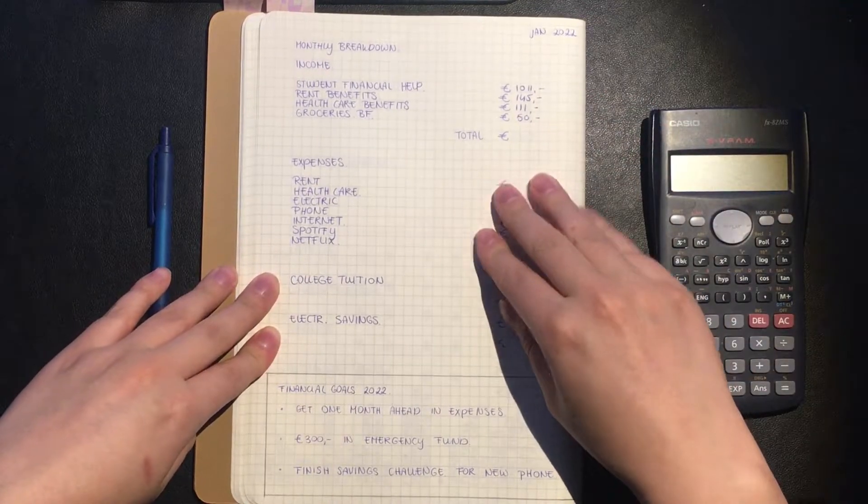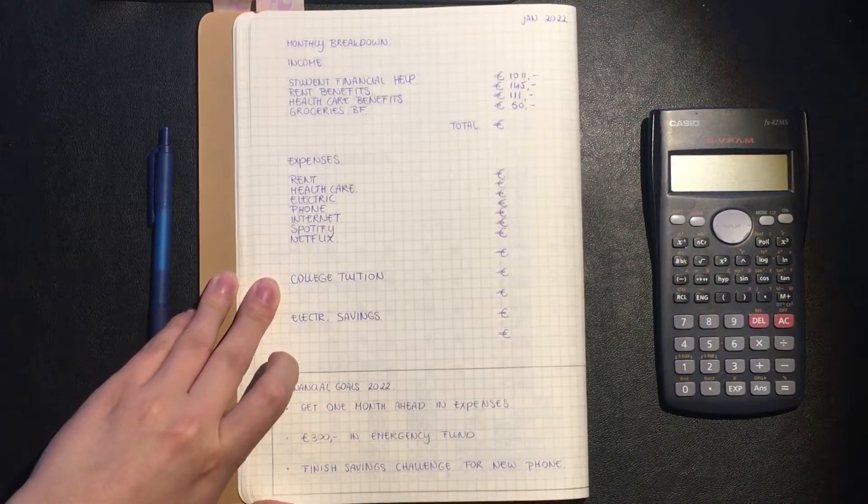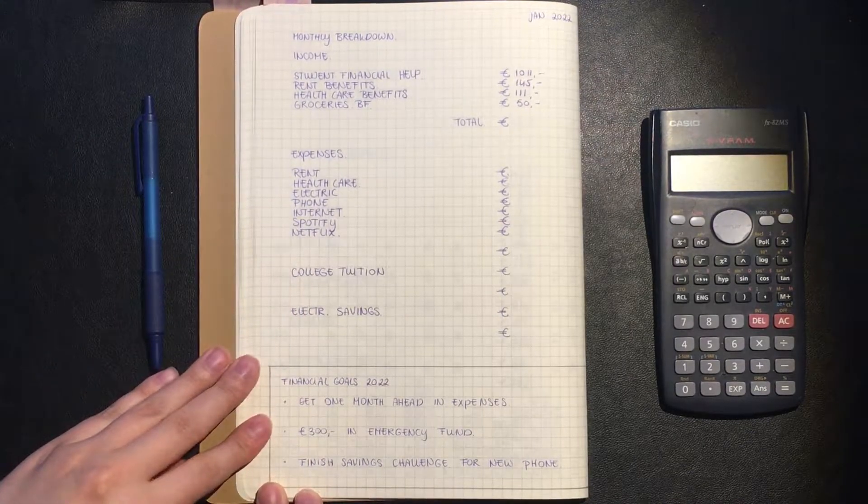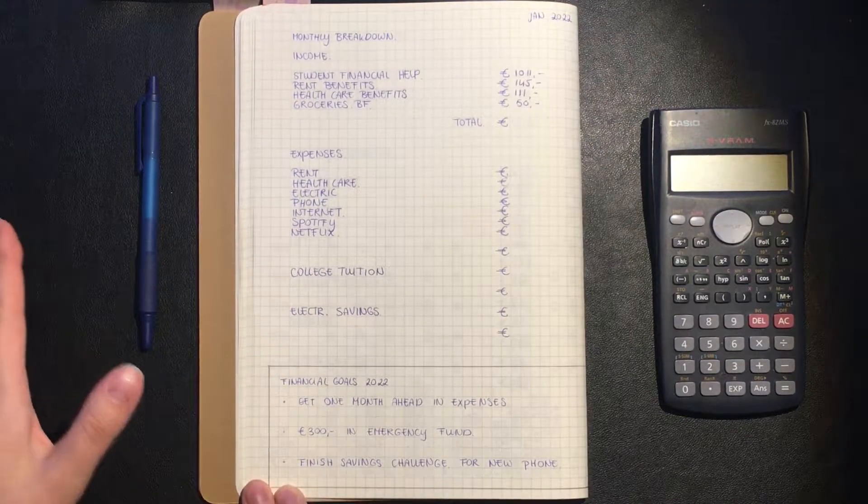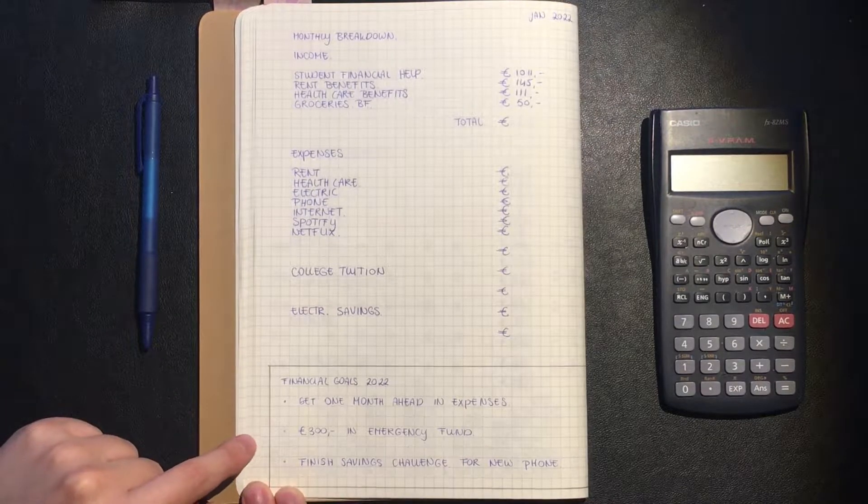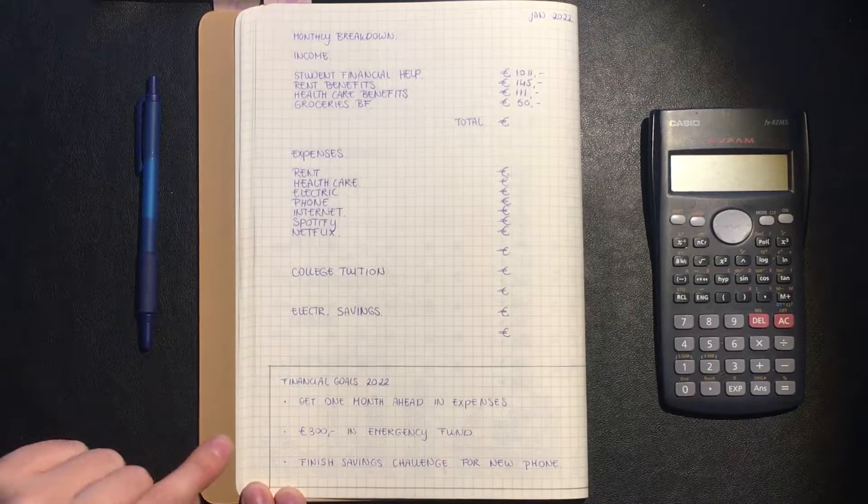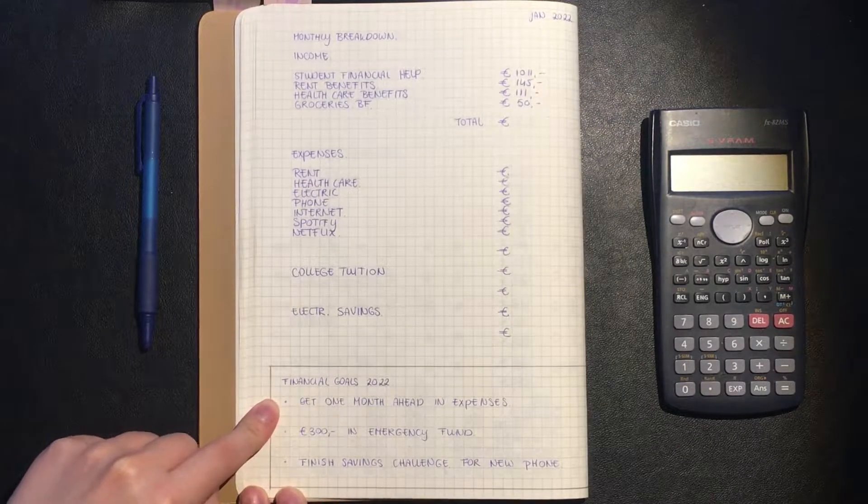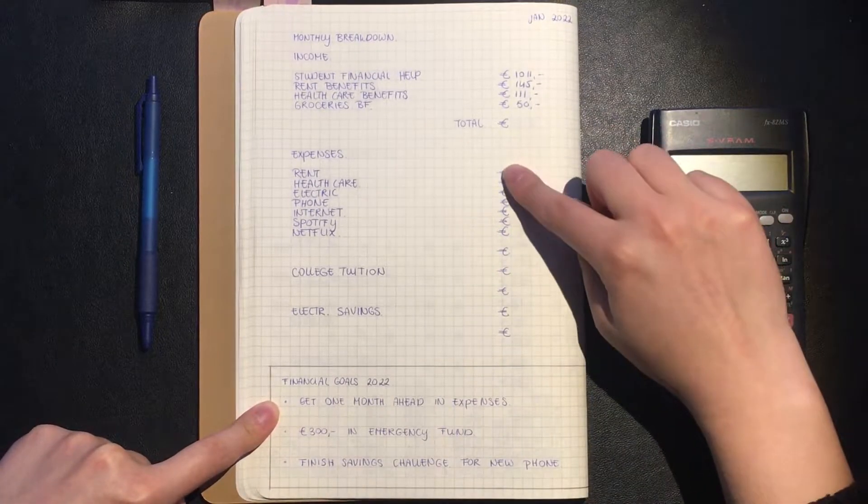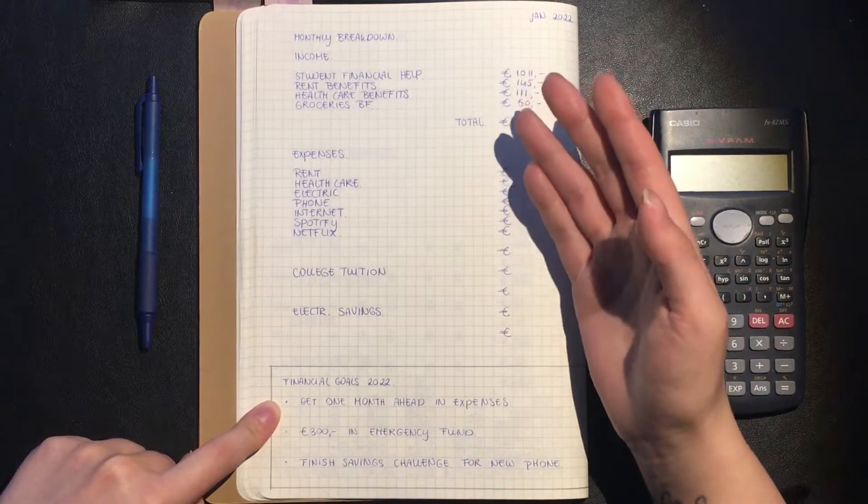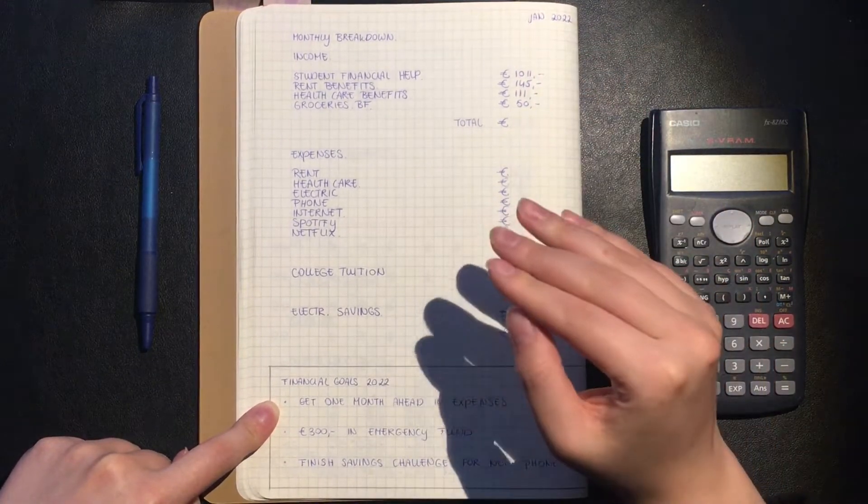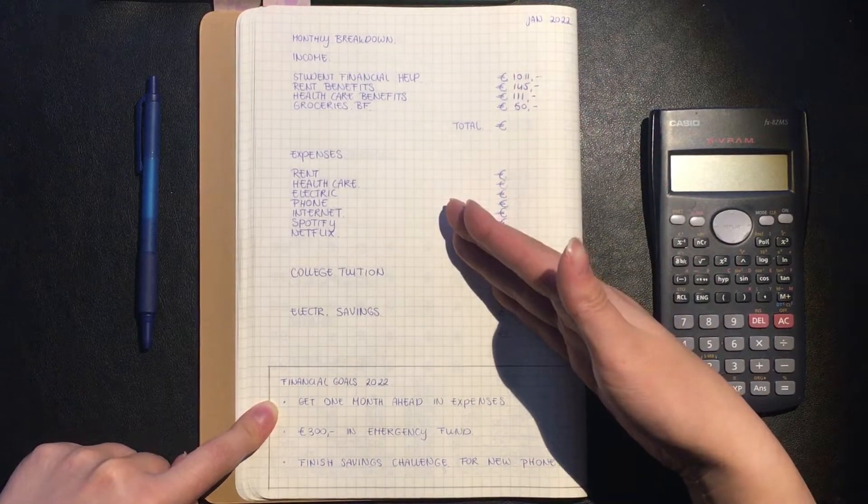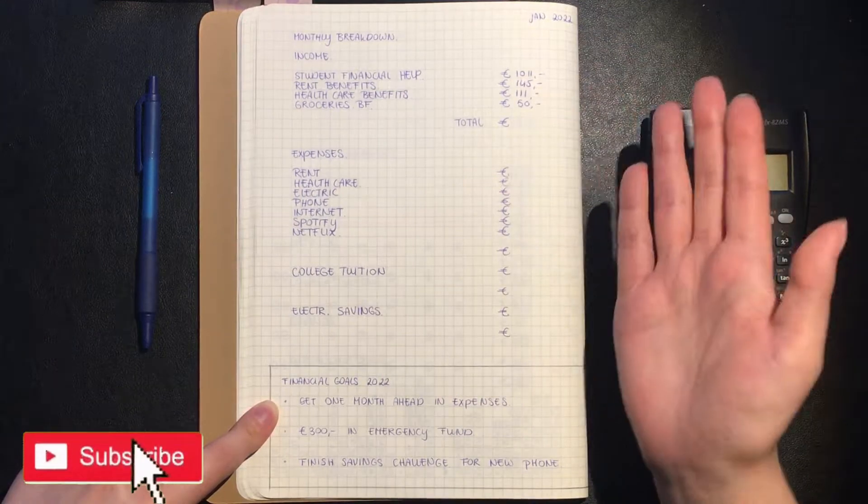However, I did make some financial goals for 2023, just like last year. I want to get one month ahead in expenses, so this is for all my bills. I want to have at least one month of savings for them, so I can in case of an emergency always get one month ahead.